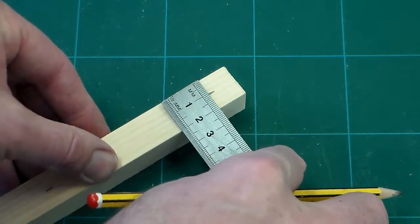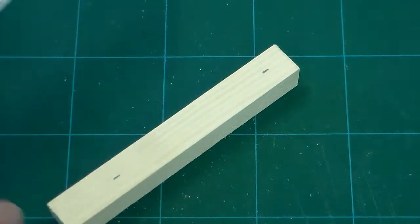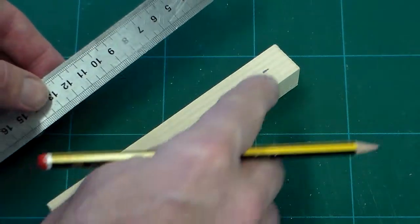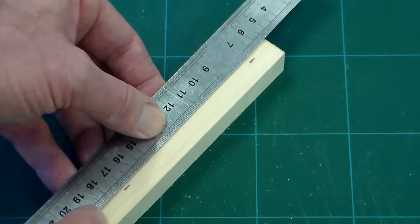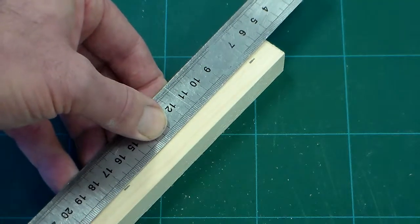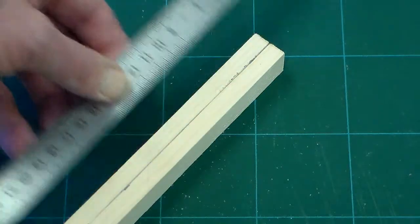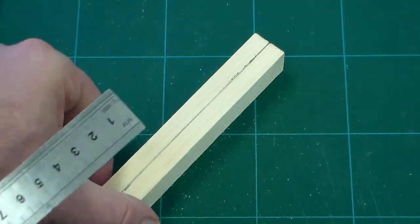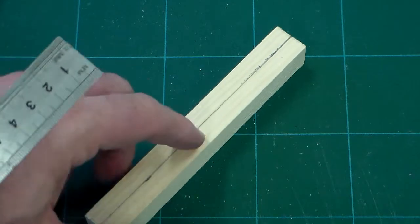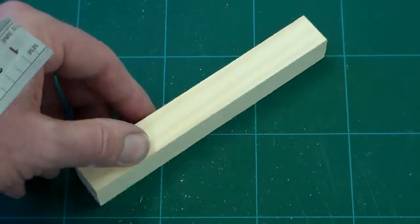Then we need to draw a center line. To do this we've got our two marks, one here and one here, and we line those up and line through. We then turn the piece of wood over so this line is now face down.